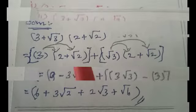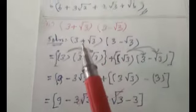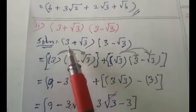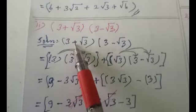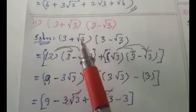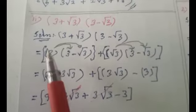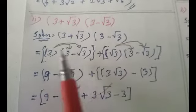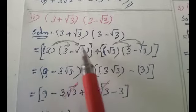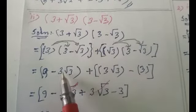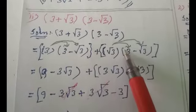Subdivision 2: it is given that (3 + √3)(3 − √3). The same rule applies. First, multiply 3 by (3 − √3), write the plus symbol, then multiply √3 by (3 − √3). Expanding: 3 × 3 = 9, and 3 × (−√3) = −3√3.